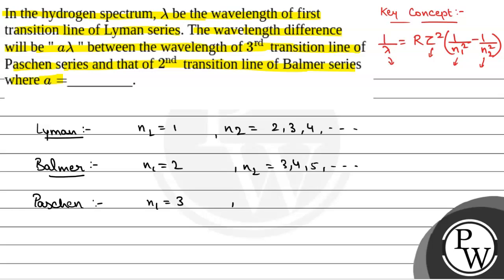For the Paschen series, N1 will be equal to 3 and N2 will be equal to 4, 5, 6, and so on.